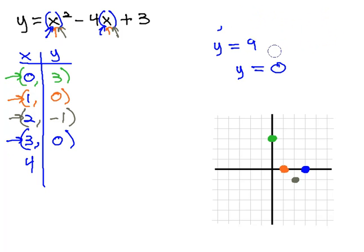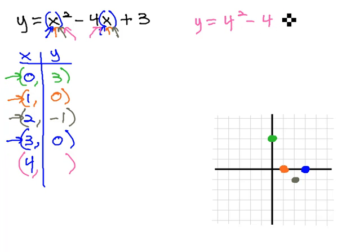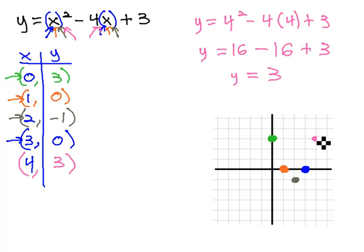One more point to test. We wanted to know what happened when x was 4. So again, we'll plug 4 in for each of the x's. y equals 4 squared minus 4 times 4 plus 3. 4 squared is 16, 4 times 4 is 16, plus 3. 16 minus 16 is 0, plus 3 is 3. So when x is 4, we find a y value of 3. 4 to the right, 3 up, we get another point.